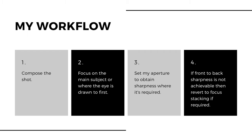If we know we need to go beyond F11 to get sharpness from front to back, that's when I start to focus stack my images. I've done a whole video on focus stacking covering two different ways to do it — I'll leave the link in the description below. To conclude, my method for obtaining focus goes like this: number one, compose the shot; number two, focus on the main subject or where the eye is drawn to first; number three, set my aperture to obtain sharpness where I need it, being sure not to go above F8 or F11; number four, if front-to-back sharpness is not achievable, revert to focus stacking.